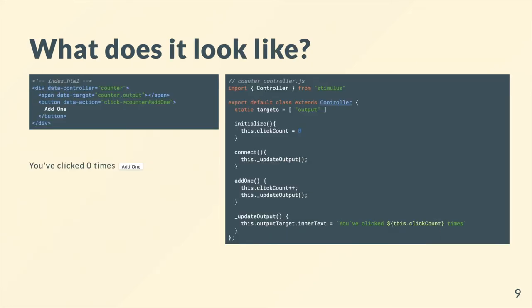So what does it look like? This is a Stimulus class. We've got the HTML on the left and the JavaScript on the right. As you can see there are some attributes and they're all relatively self-explanatory — targets connected to targets, controller connected to something that actually does something.